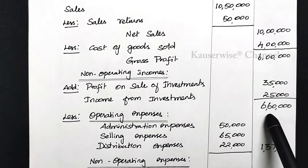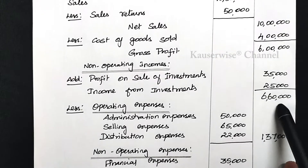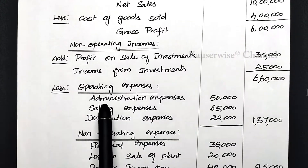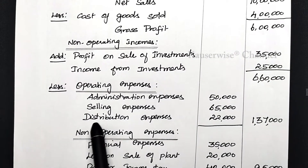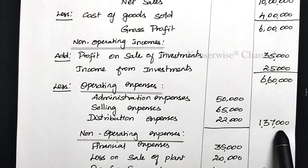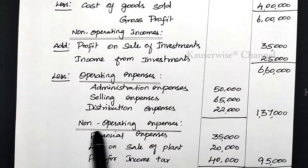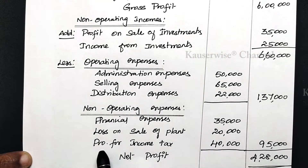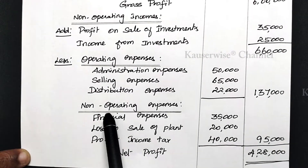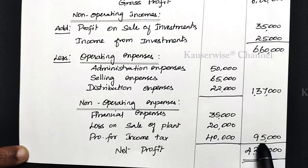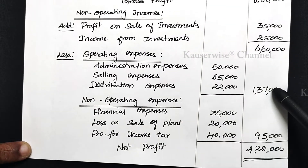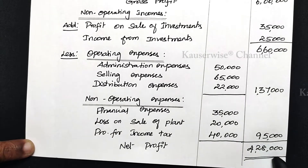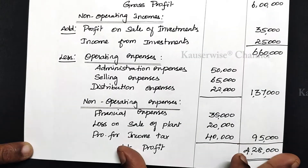After adding non-operating income, the total amount is 6 lakhs 60,000. Then operating and non-operating expenses are subtracted. Operating expenses are: administrative expense, selling expense, and distribution expense — totaling 1 lakh 37,000. Non-operating expenses are financial expenses, loss on sale of plant, and provision for income tax — totaling 95,000. After subtracting operating and non-operating expenses, the residual amount is 4,28,000. This is the net profit as per the income statement.